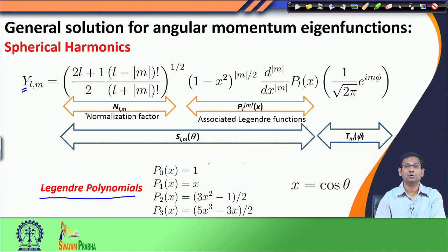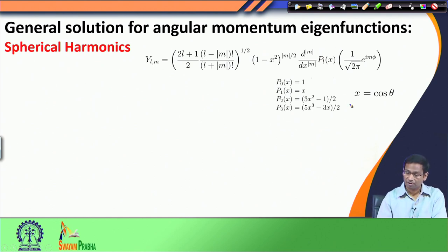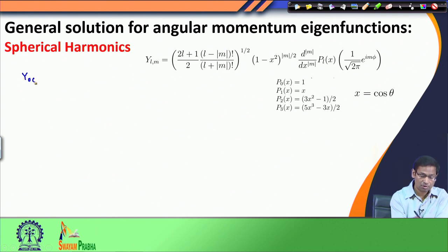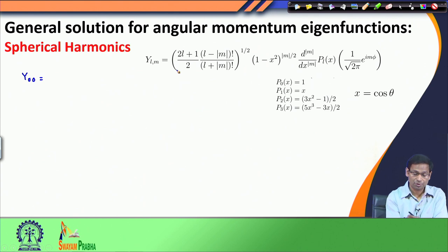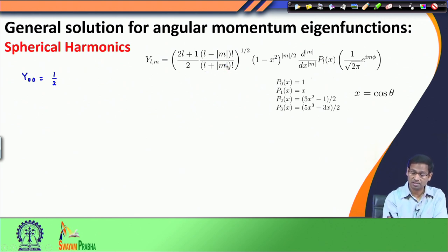This is the general solution for the angular momentum eigenfunctions. Now let us write down a few eigenfunctions using this general formula. First, the simplest: Y_00 where l equals 0 and m equals 0. The normalization factor has (2l+1) equals 1, and (l minus |m|)! equals (0 minus 0)! equals 0! equals 1, while (l plus |m|)! also equals 1. So we have the square root of 1/2.